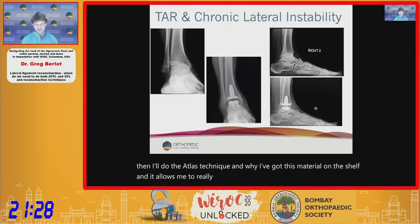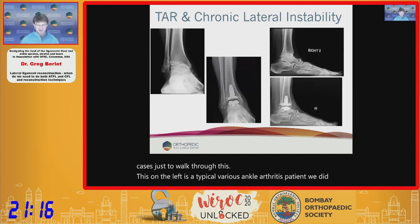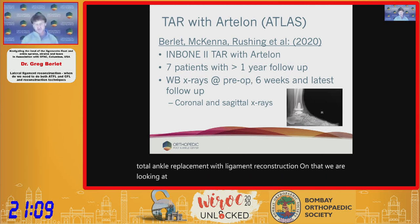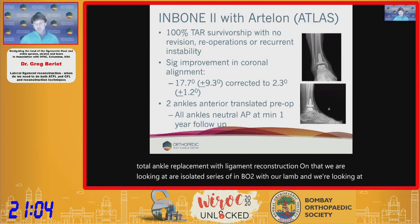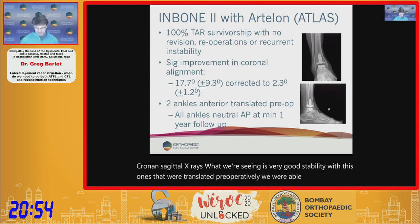For case examples: a typical varus ankle arthritis patient underwent in-bone total ankle replacement with ligament reconstruction. Looking at our isolated series of in-bone 2 with Artalon, coronal and sagittal x-rays show very good stability. Ankles that were translated preoperatively are reduced back into joint and maintained.